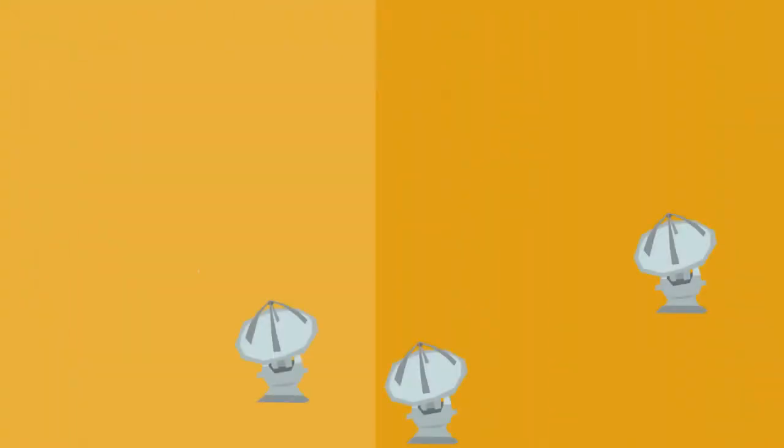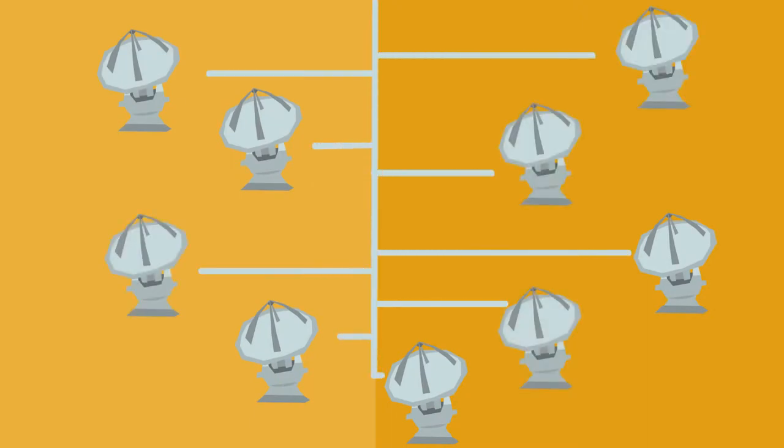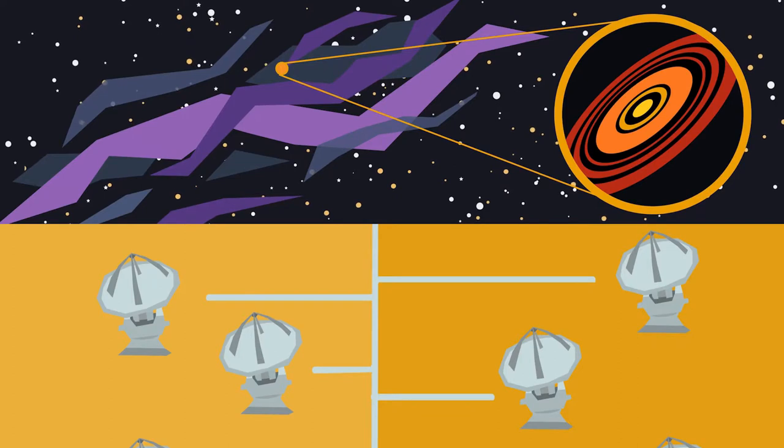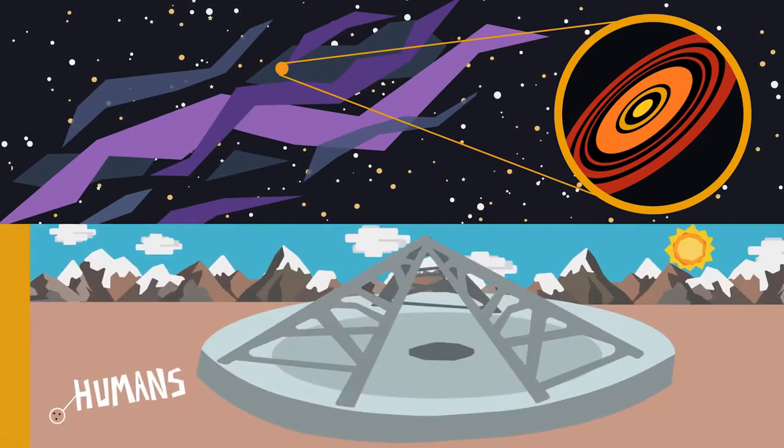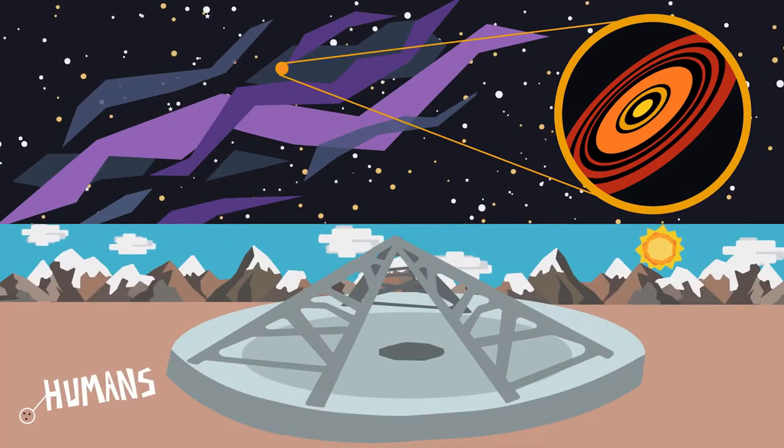That was precisely what astronomers thought years ago. By using several different small telescopes as one, they could see extremely fine details of the universe, just like if they were using a single telescope several kilometers across. They called this technique interferometry.